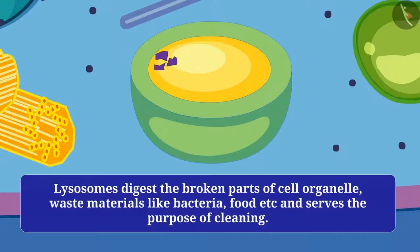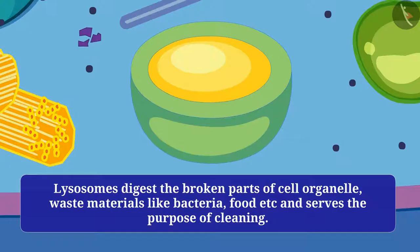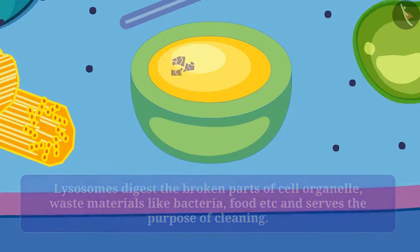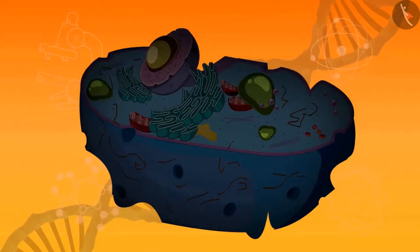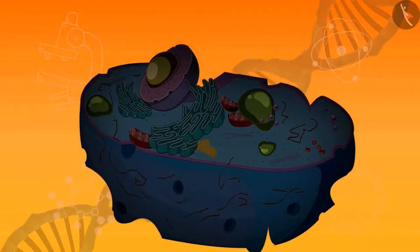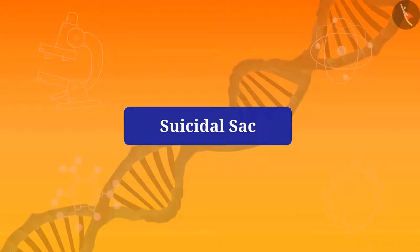Inside the cell, broken parts of cell organelles and residual material coming from outside — such as bacteria and food — go into the lysosome, where its digestive enzymes break them down. When a cell is damaged or dead, the lysosomes burst and the enzymes digest their own cell. Hence, lysosomes are called the suicidal sac of the cell, and they work to keep the cell clean.